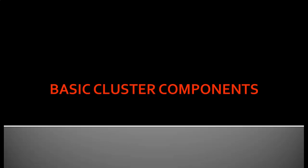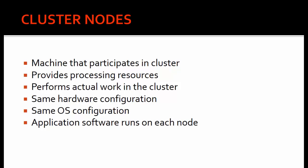We are back to the cluster components. Till now we have understood the cluster from normal diagrams, but let us get a little bit inside a cluster — what is a cluster, what are the components, and how a cluster is made. The first and most important component is cluster nodes. Without cluster nodes you cannot make a cluster. It's a single machine which participates in the cluster, and every machine that is part of the cluster is called a node. Each node is responsible for providing the processing resources.